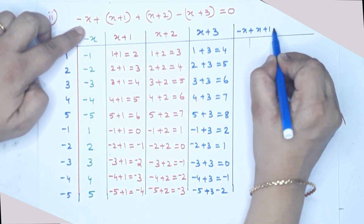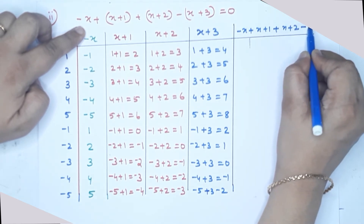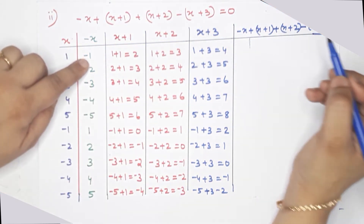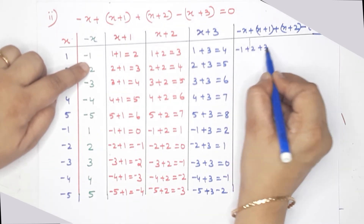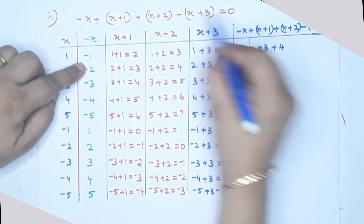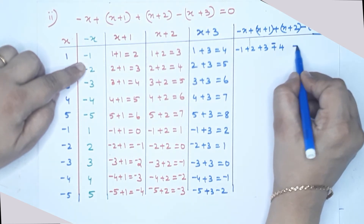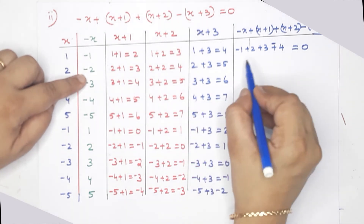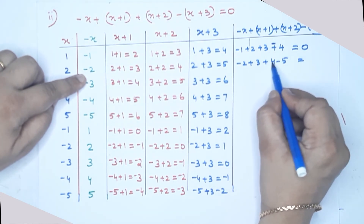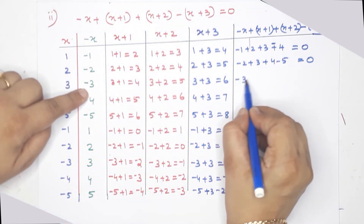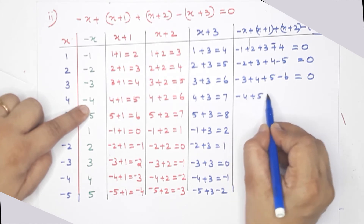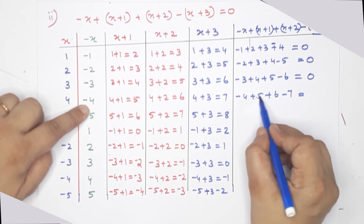This is negative x plus x plus 1 plus x plus 2 minus x plus 3. When x equals 1: negative 1 plus 2 plus 3 minus 4 equals 0. When x equals 2: negative 2 plus 3 plus 4 minus 5 equals 0. Negative 2 plus 4 equals negative 5, which equals 0. Negative 3 plus 4 plus 5 minus 6 equals 0.